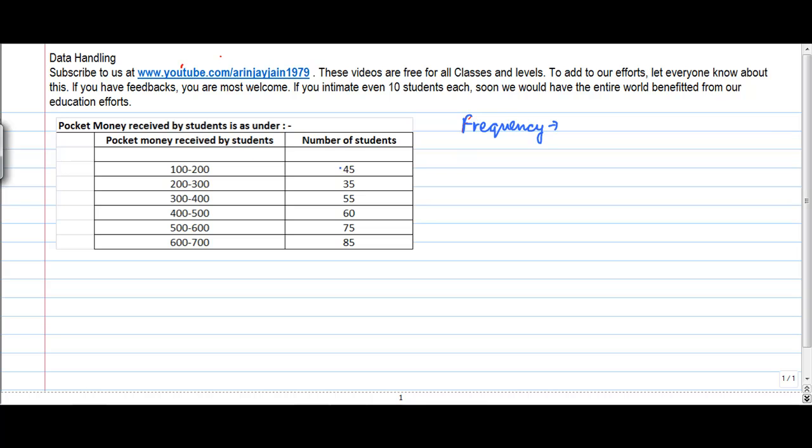Now if you see on the left hand side what you have is the pocket money data received by students which is given. So there are students who receive between rupees hundred and two hundred, there are 45 students who receive this amount. Between 200 and 300 there are 35 students who receive this amount and so on.